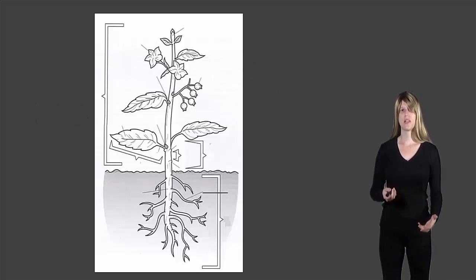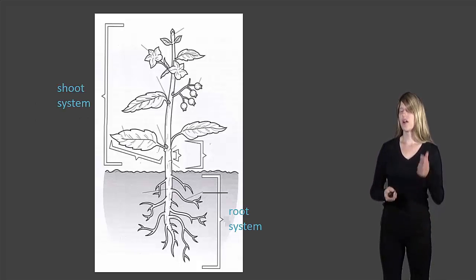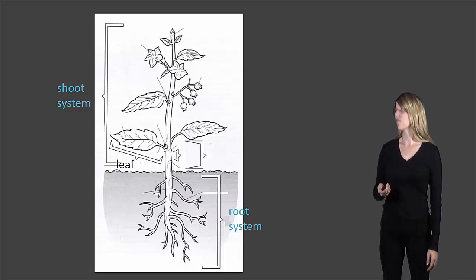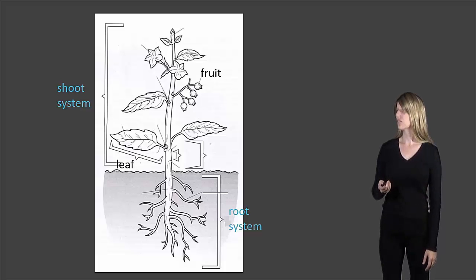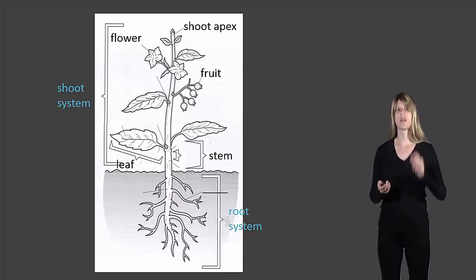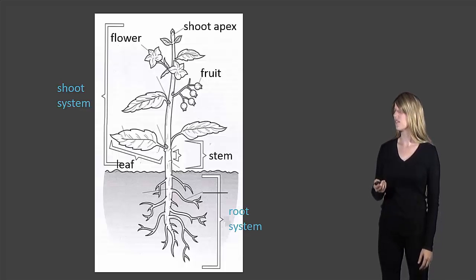Let's take a look at a plant. The part that is below the surface is the root system, and the part that is above the surface is called the shoot system. The shoot system has several parts: the leaf, the fruit, the flower, the stem, and the shoot apex, which is the very top where the plant is growing upwards. So those are the main parts of the shoot system.